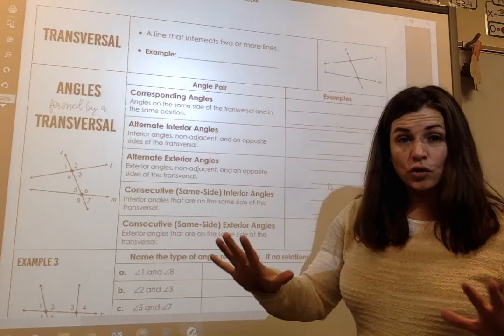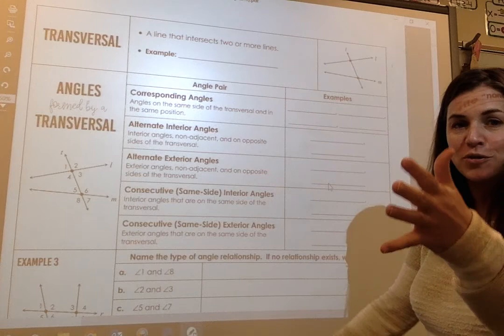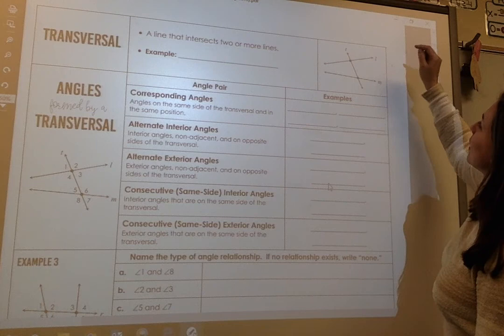Let's flip over to the back — transversals. This is important, this is the fun part. I love transversals and lines being cut by a transversal. A transversal is a line that intersects two or more lines. Here's L and M, and line T is intersecting them, so line T is my transversal.